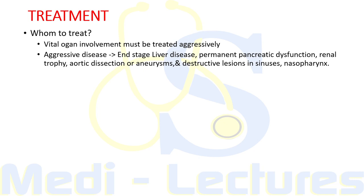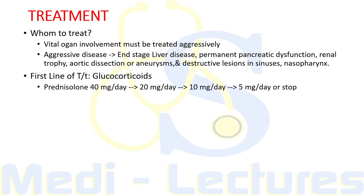Regarding treatment, vital organ involvement must be treated aggressively because IgG4 related disease can lead to serious organ dysfunction and failure. Aggressive disease can quickly lead to end-stage liver disease, permanent pancreatic dysfunction, renal atrophy, aortic dissection or aneurysm, and destructive lesions in sinuses and nasopharynx. However, not every manifestation requires immediate treatment — for example, IgG4 related lymphadenopathy can be asymptomatic for years, and watchful waiting is prudent, though monitoring is essential.